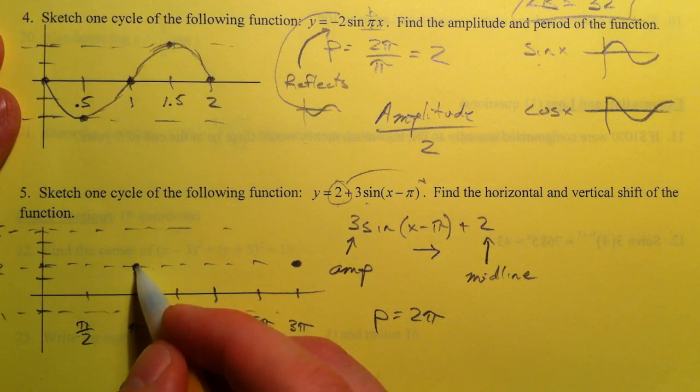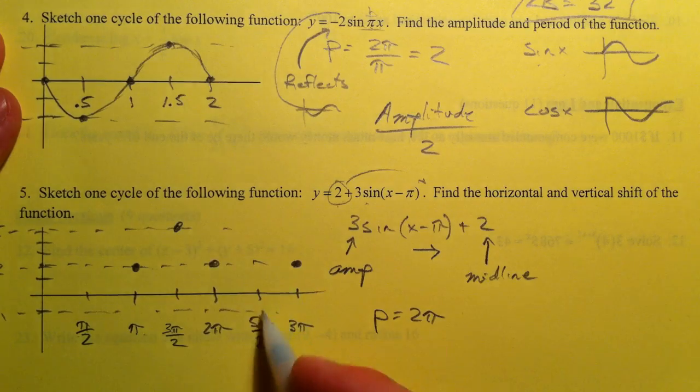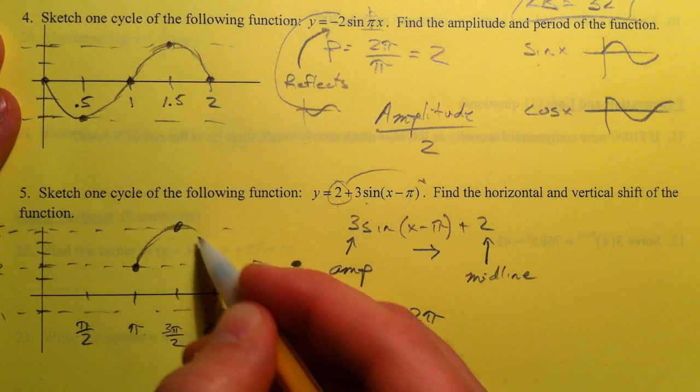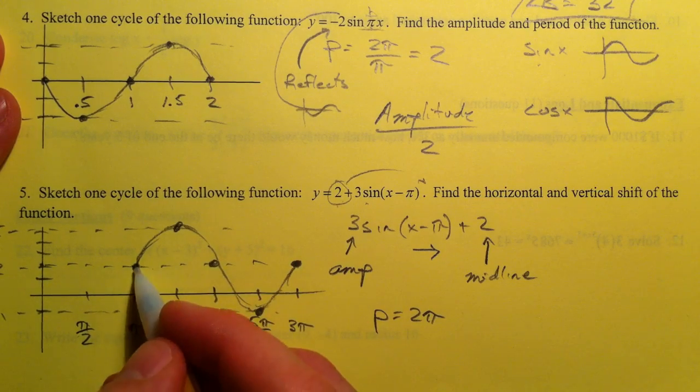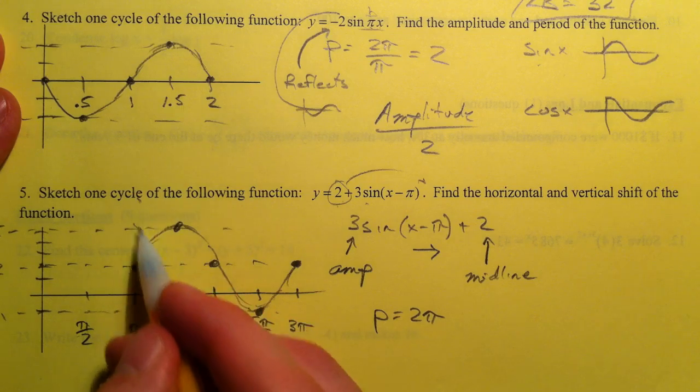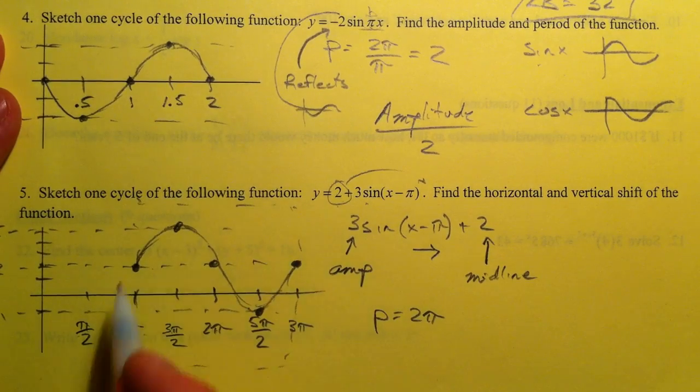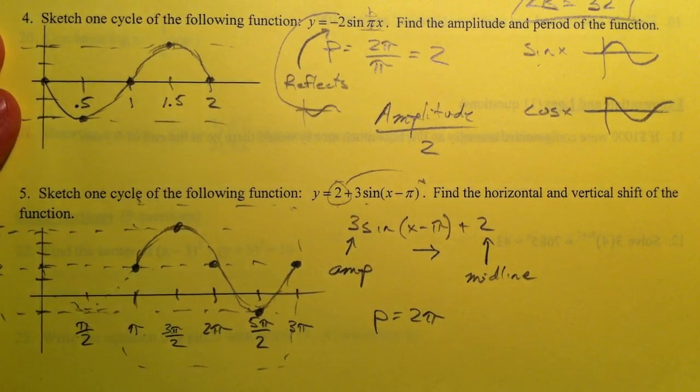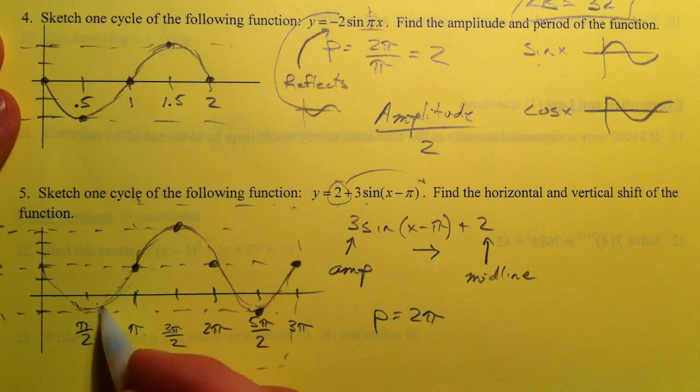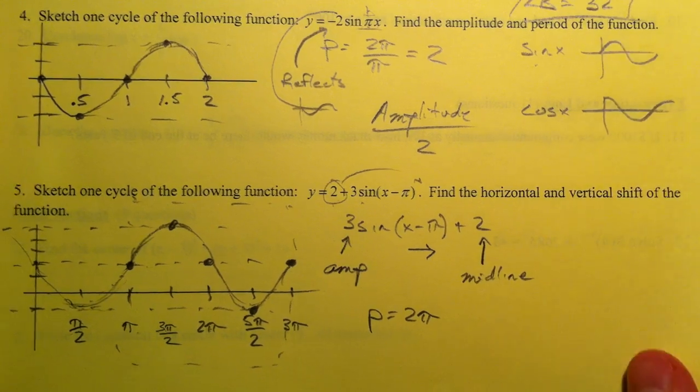So it's a sine graph, so it's going to go from the equilibrium up to the peak, back to the middle, down to the valley, and back up to the top. And so, and then we could repeat the pattern. This is usually what we're used to seeing. But we could repeat the pattern going backwards as well. And it would look like that. Alright, and that's graphing sine and cosine.